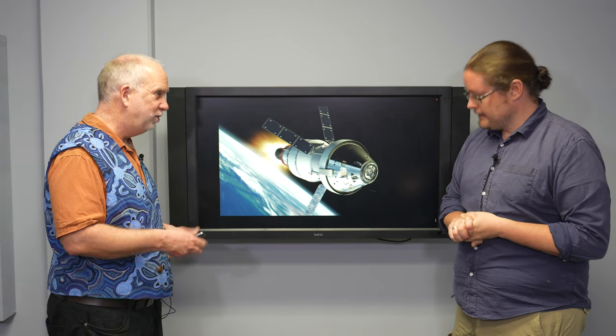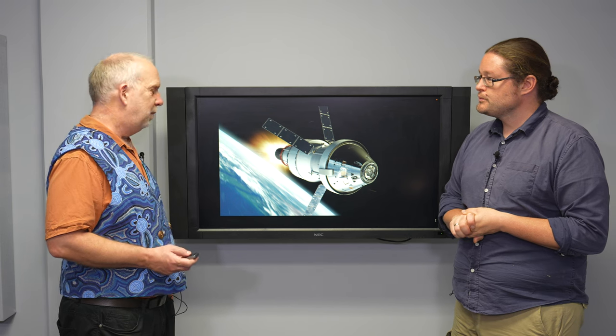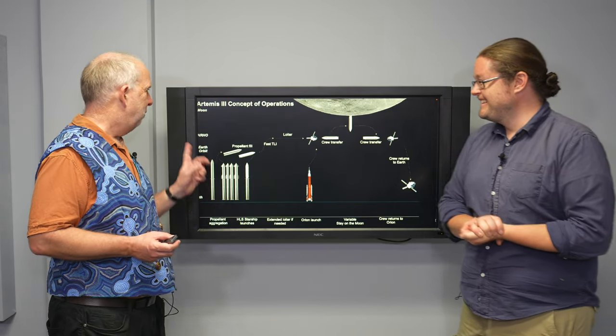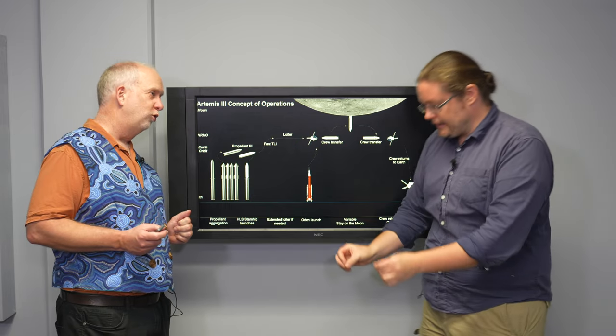And the Orion 1 was unmanned, flew around the moon, just to check that it could all work and reenter successfully. Orion 2 will carry people. They won't land on the moon. They'll go around it. And the plan may be in two or three years' time, but I'll believe it when I see it, is that Artemis 3 mission actually goes and lands.